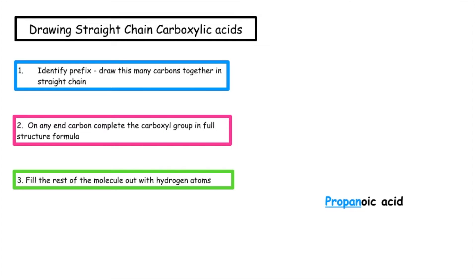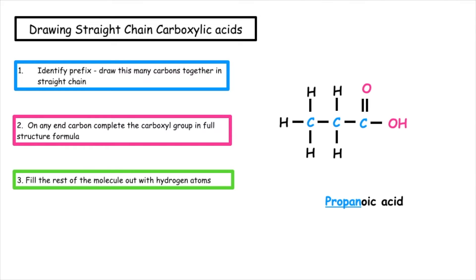Here's the second example. We've got propanoic acid, so we have to identify the prefix as 'prop'. Prop tells us we've got three carbon atoms, so we're going to draw those together. On any end carbon — I'm going to use the one on the right hand side — I'm going to complete my carboxyl group, so I've got my double bond O and OH. Then I want to fill the rest of the molecule out with hydrogen atoms. This is how we draw propanoic acid.